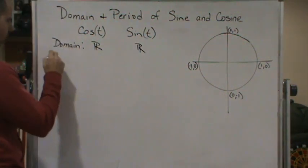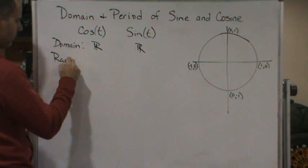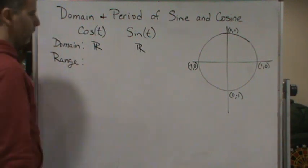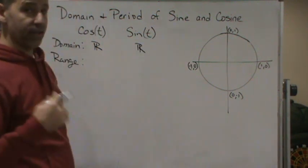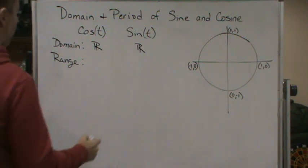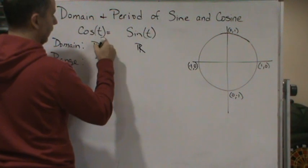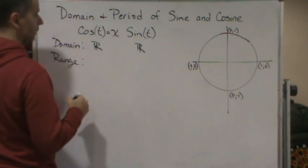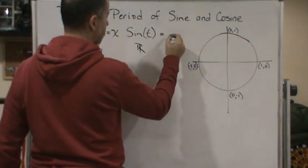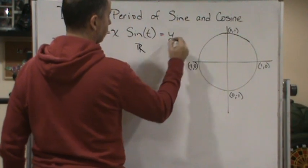So all real numbers. Now the range, think about the range. Range are all the values that come out, right? So all the values that come out. Now remember, cosine is equal to x, and sine t is equal to y.